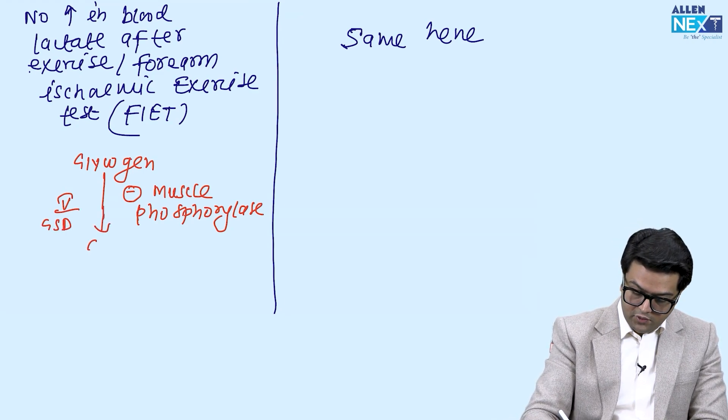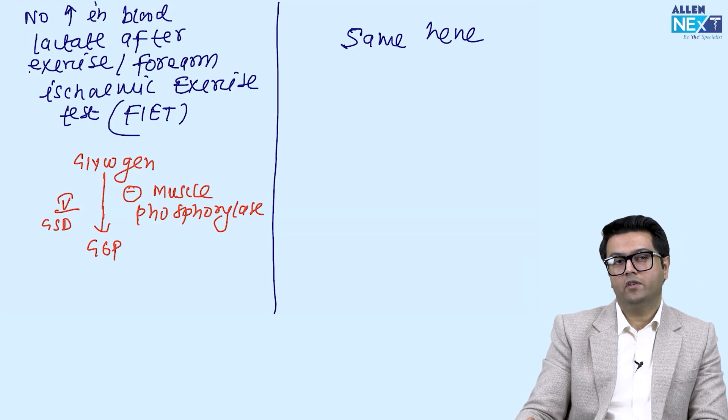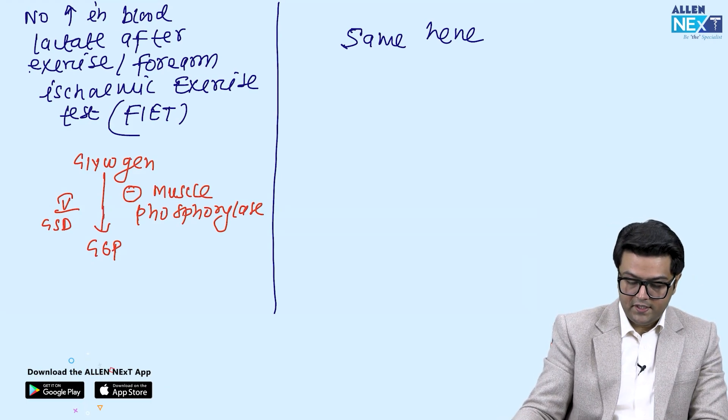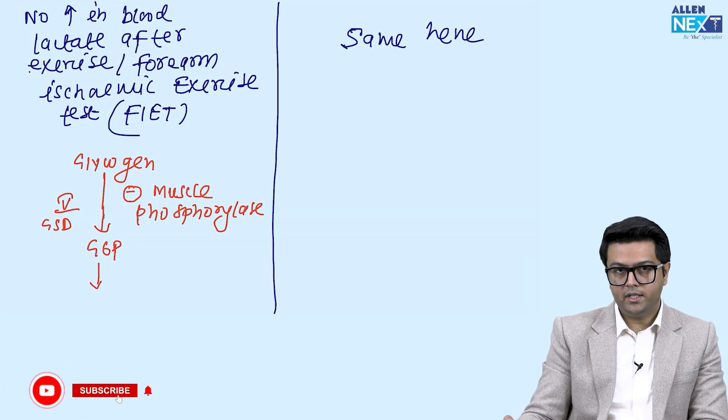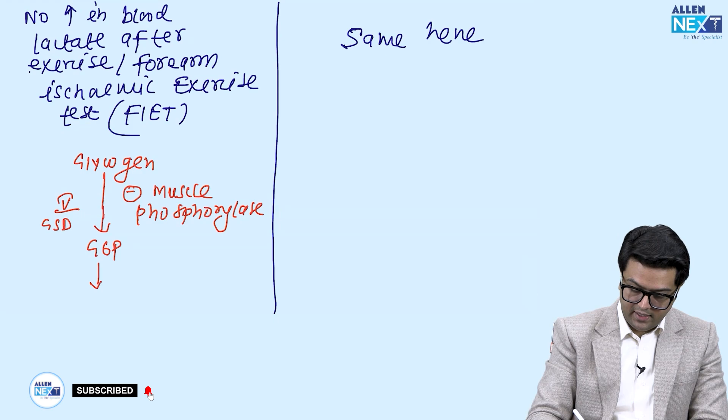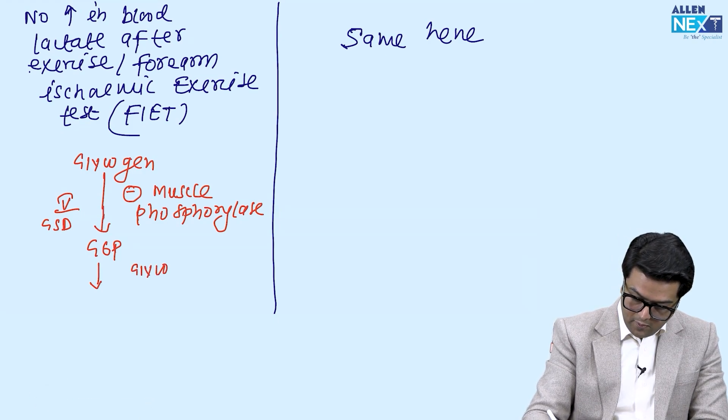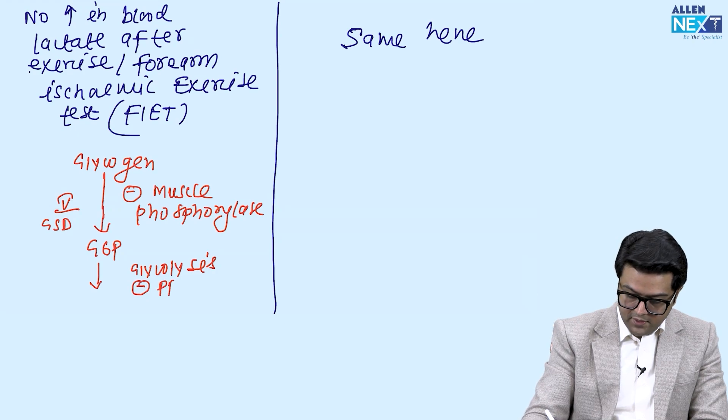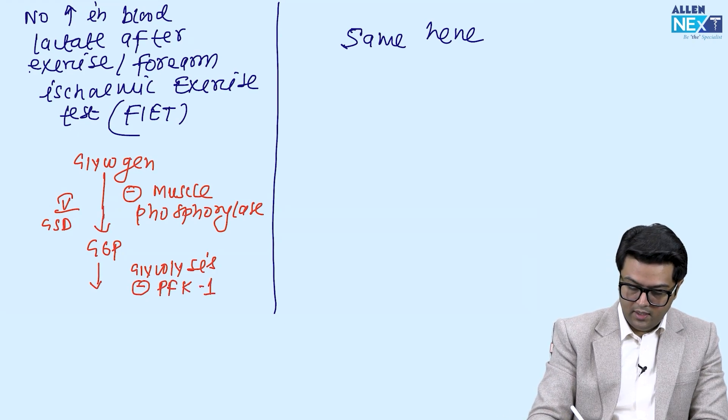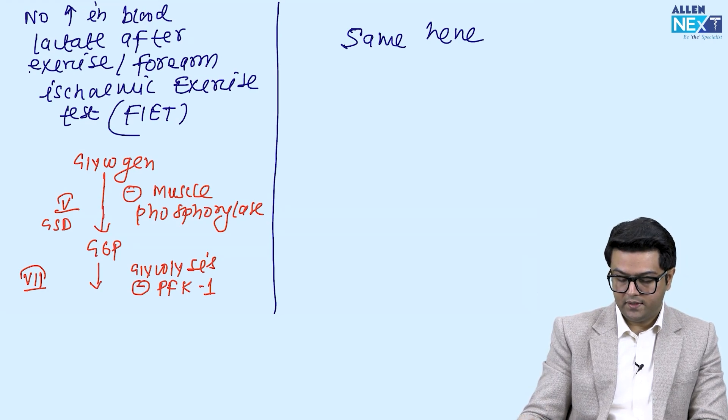Then glycogen converts to G6P - first G1P, then G6P. Then G6P converts to the pyruvate and then to the lactate. That is actually glycolysis. This has to be used in glycolysis. There is absence of PFK-1. That is type 7 or the Tarui's disease.